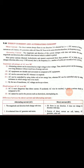Alternative current: the magnitude and direction of this current changes with time. It attains the same magnitude and direction after a definite time interval, which is called its period.